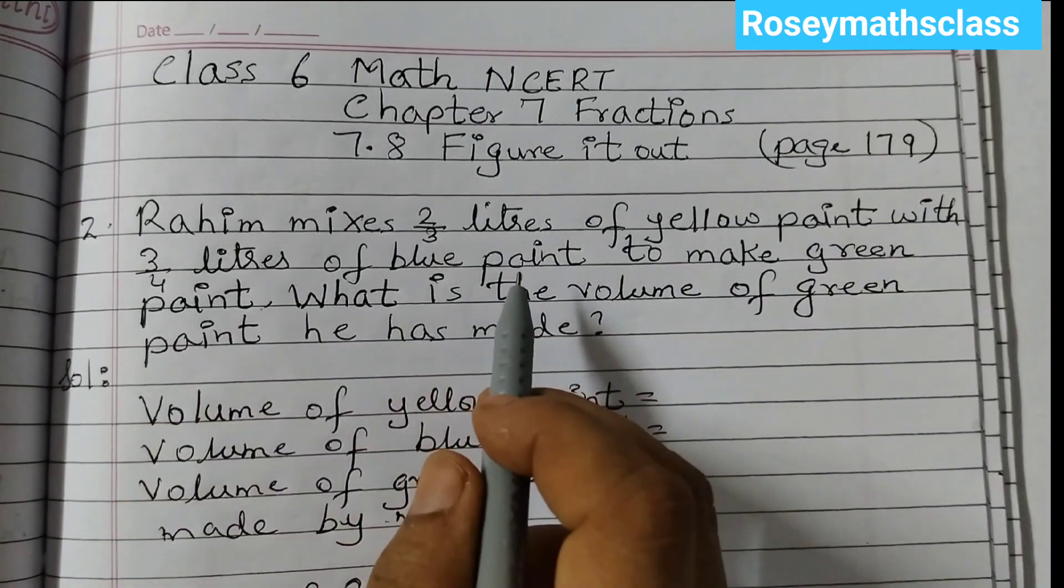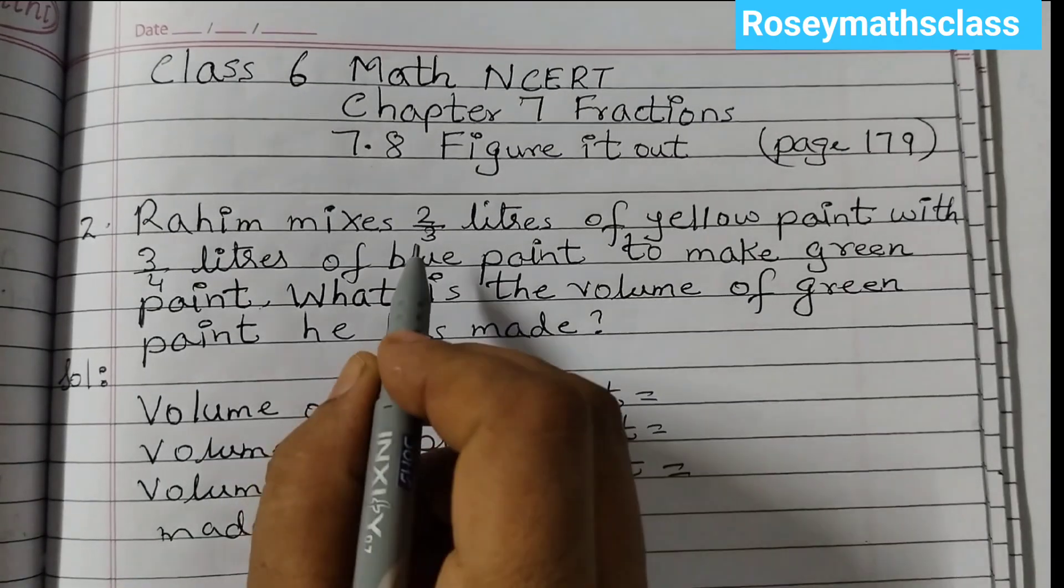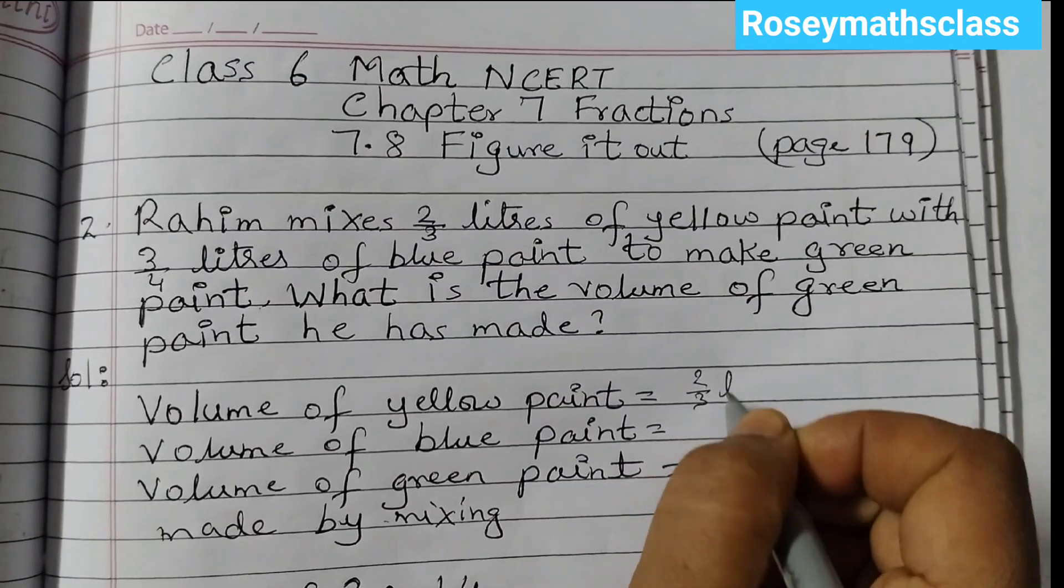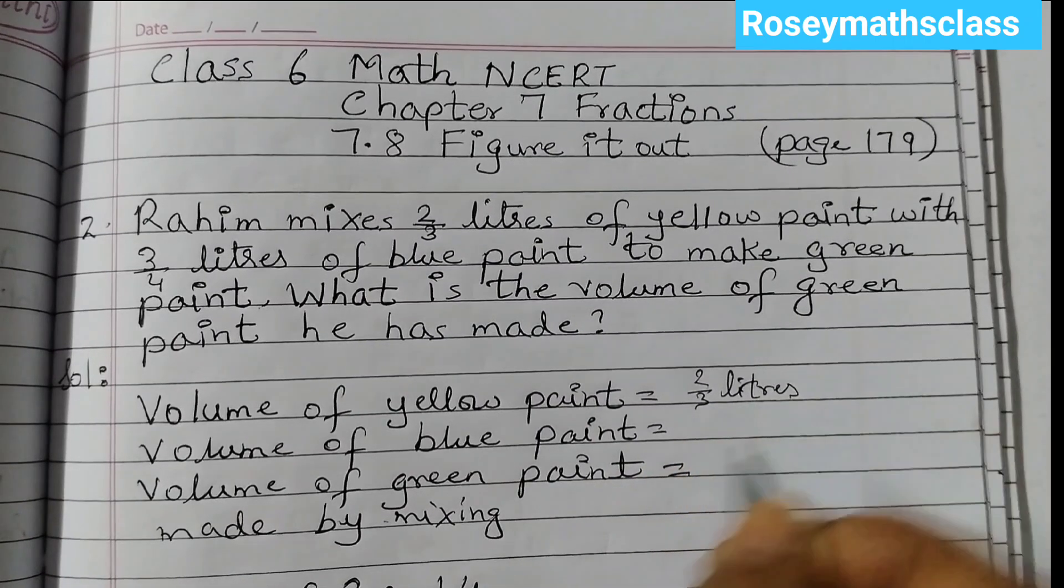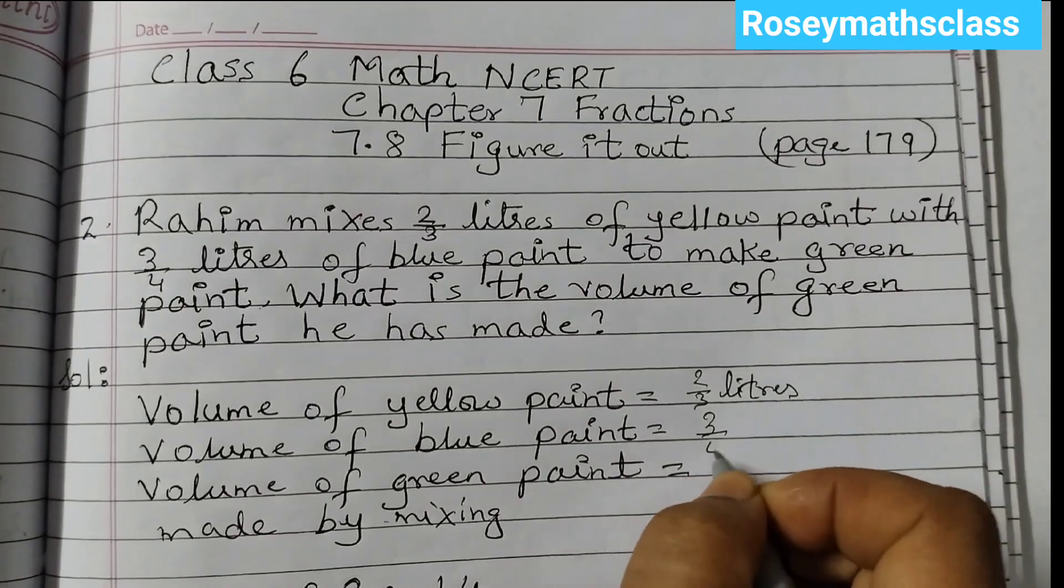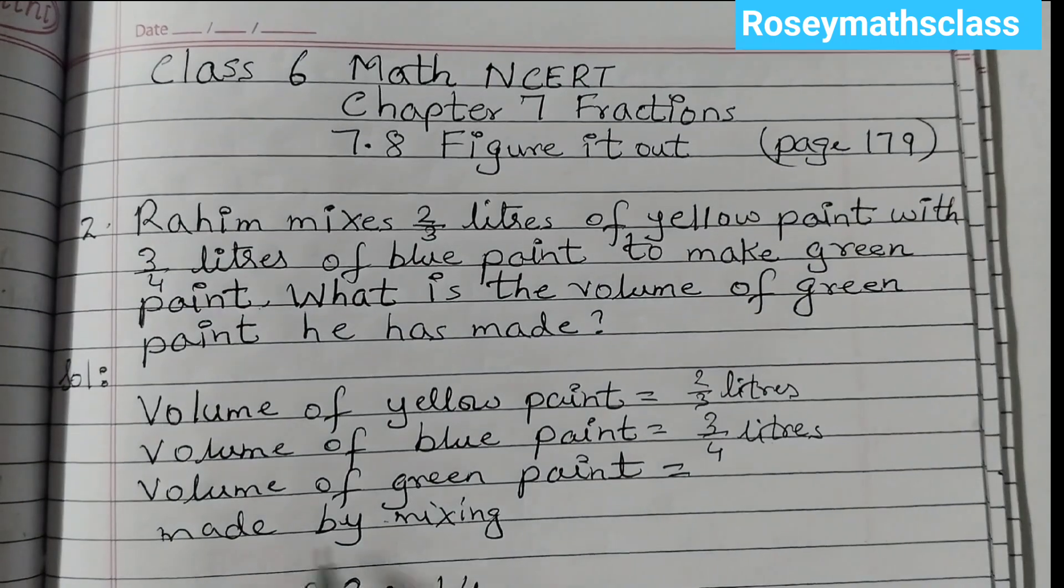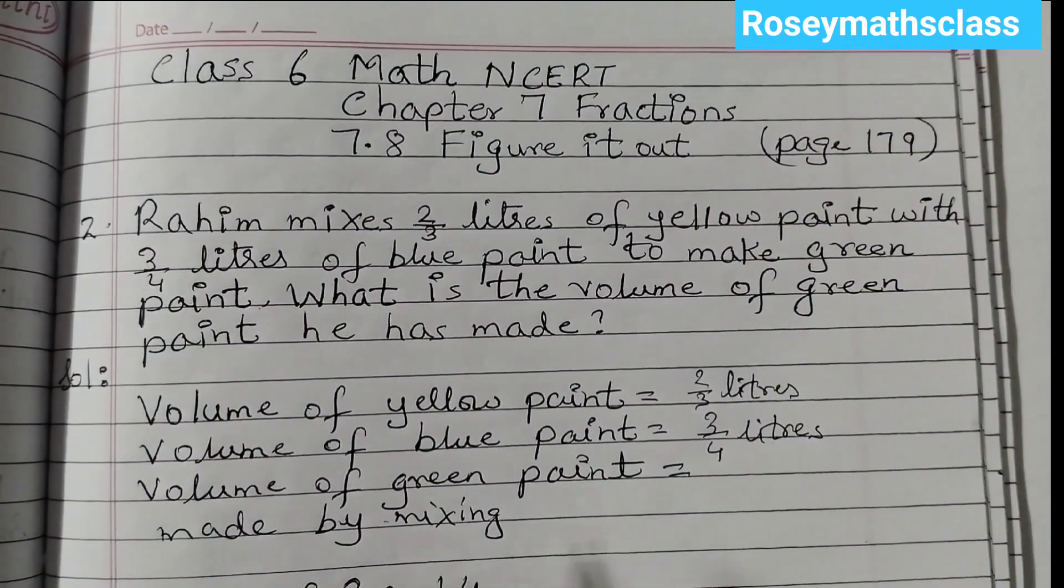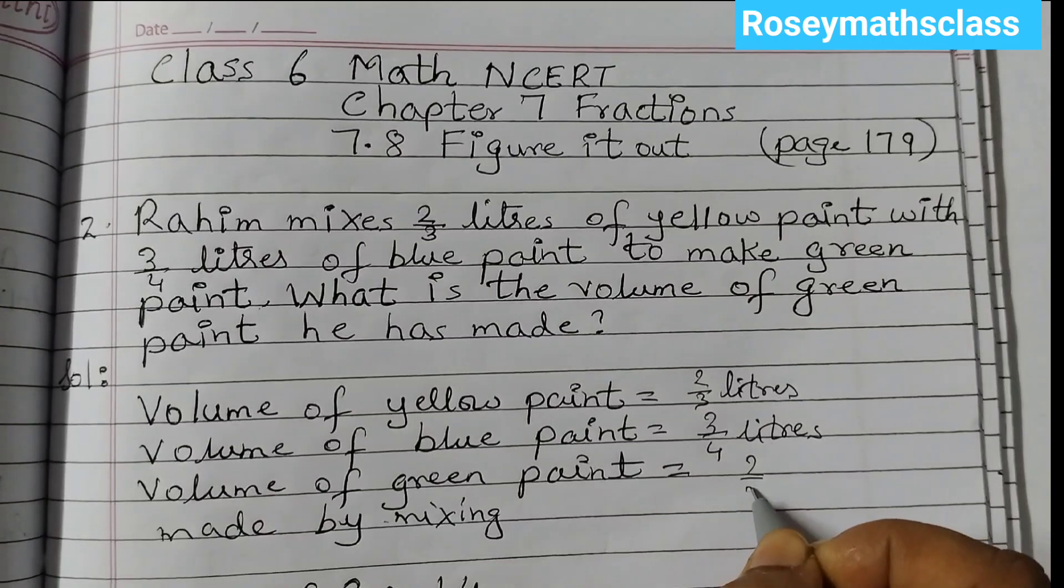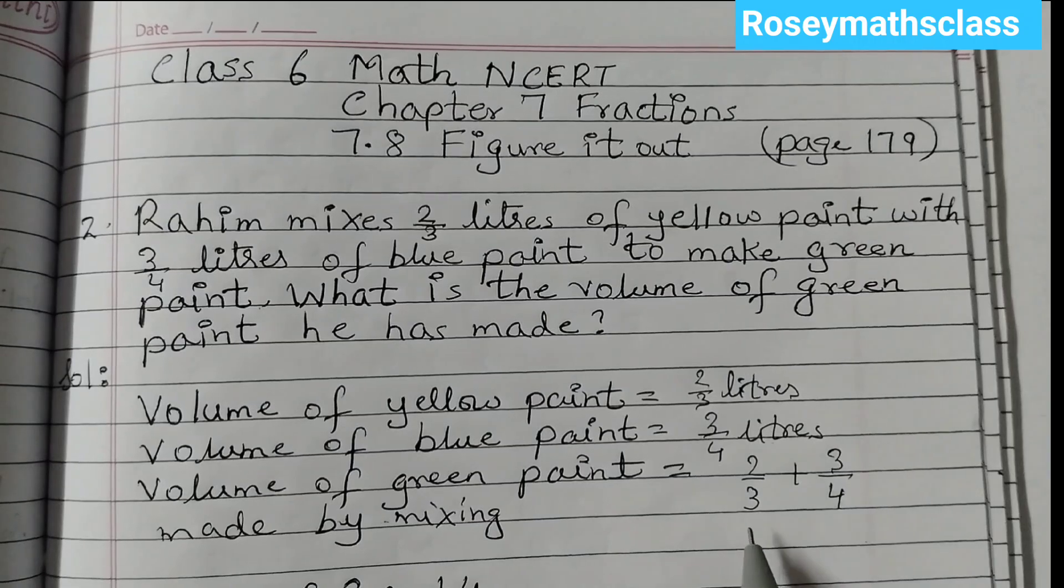Let us start with the solution. Volume of yellow paint = 2/3 liters. Volume of blue paint = 3/4 liters. Volume of green paint made by mixing = 2/3 + 3/4.